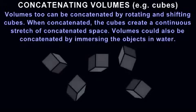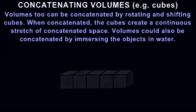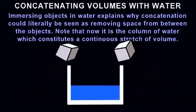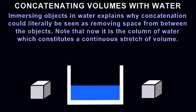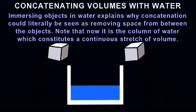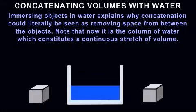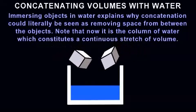Volumes can also be concatenated by immersing objects in water. Immersing objects in water explains why concatenation could literally be seen as removing space from between the objects. Note that now it is the column of water which constitutes a continuous stretch of volume.